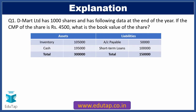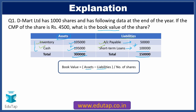Let's first bring back our question. We need to classify the table into assets and liabilities. Cash and inventory go into the assets category, while accounts payable and short-term loans come under liabilities. Totalling the asset side: inventories worth Rs. 1,05,000 and cash worth Rs. 1,95,000, when added up, come to Rs. 3,00,000. The book value formula is: book value equals assets minus liabilities, and this resulting quantity is divided by number of shares.